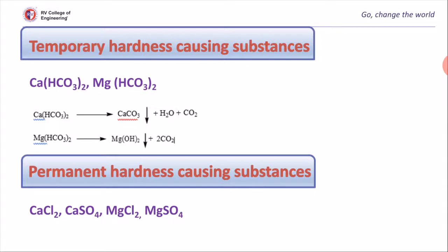Temporary hardness and permanent hardness: depending upon the type of substance present, we classify them as temporary or permanent hardness substances. Bicarbonates of calcium and magnesium are responsible for temporary hardness — if water contains these salts, on boiling their hardness can be removed. Whereas chlorides and sulfates of calcium and magnesium remain even after boiling; their hardness cannot be removed. Hence, they are called permanent hardness-causing substances.